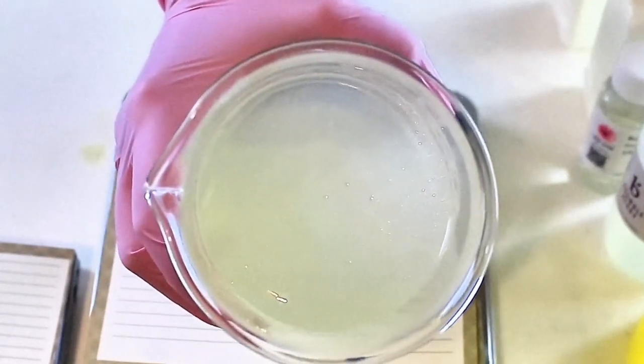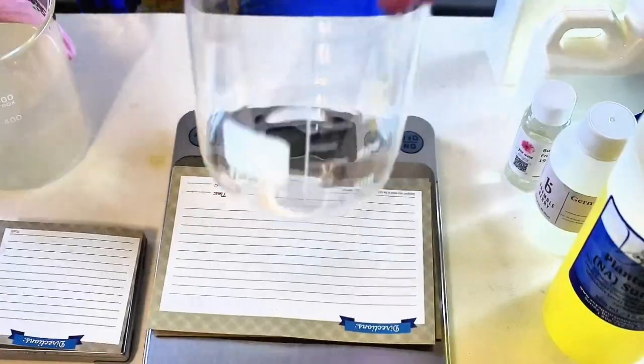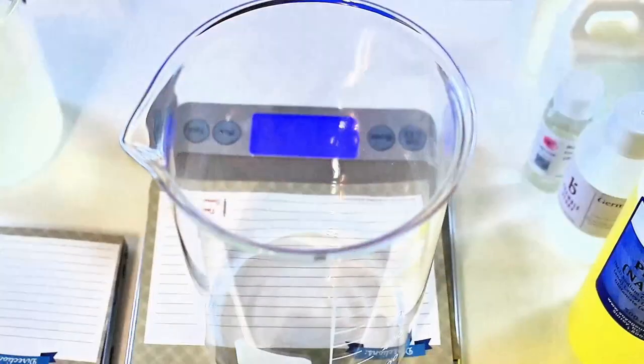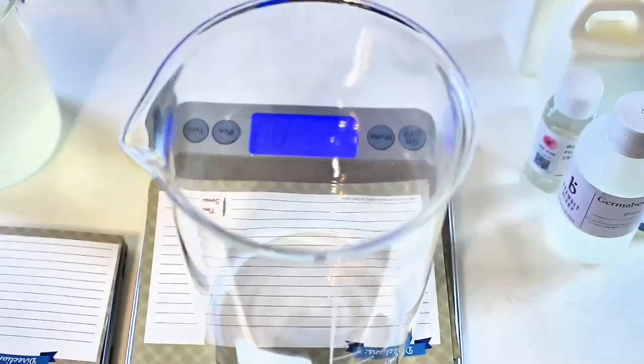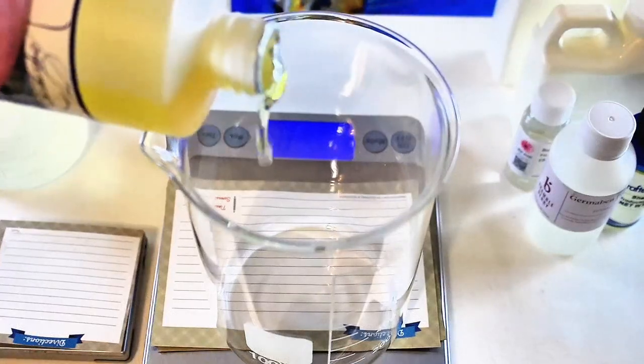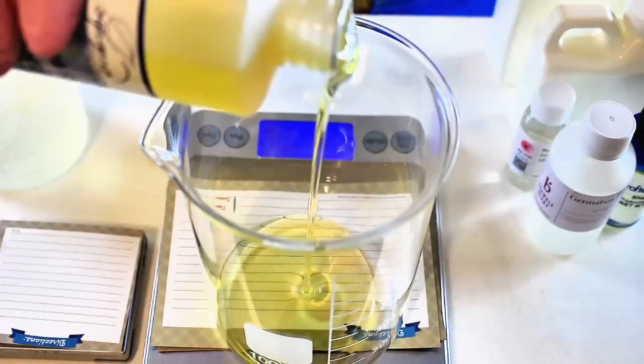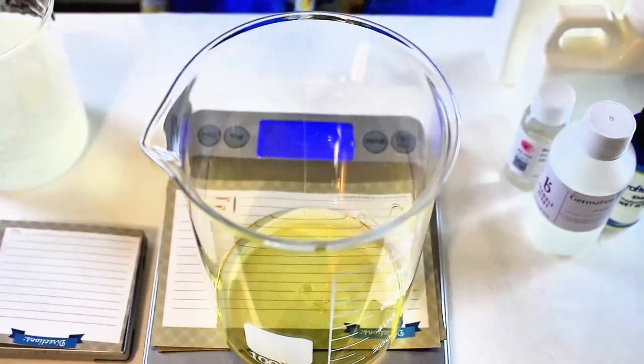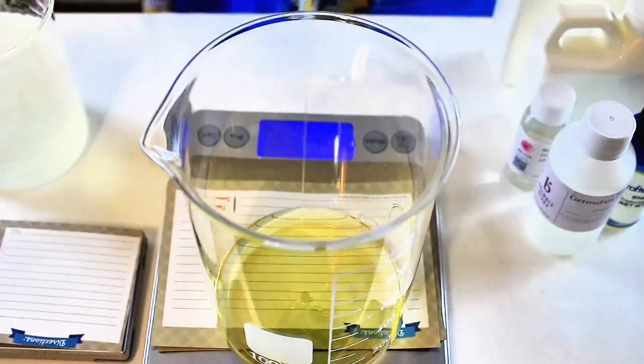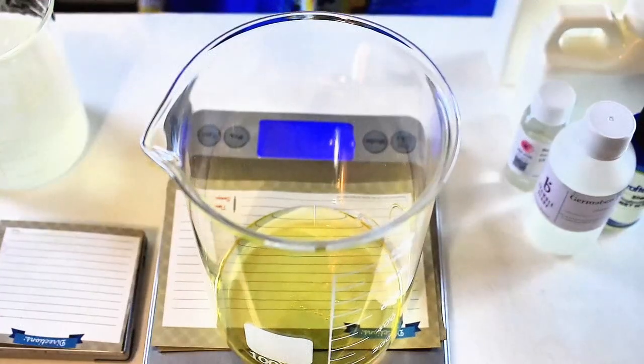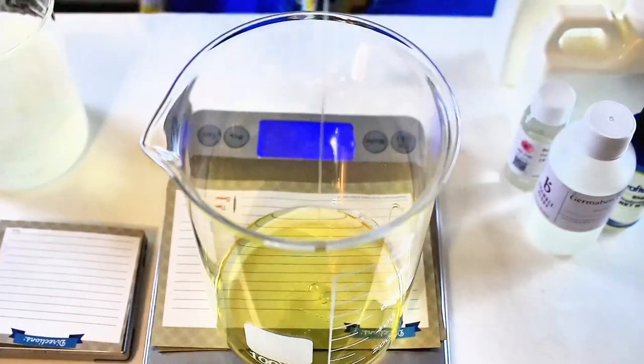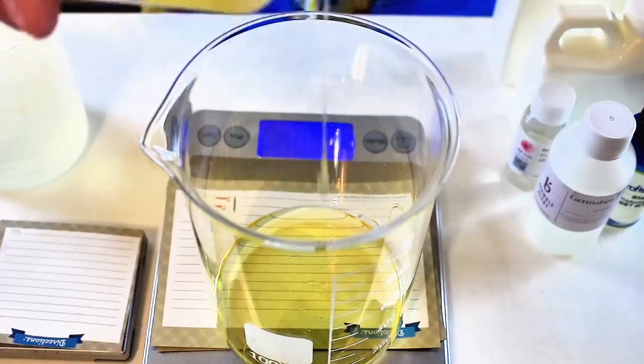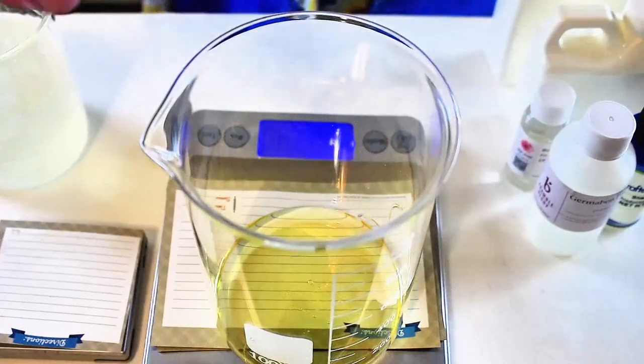Now, we're getting ready for the surfactant phase. I'm using a surfactant blend that is really mild. It consists of sodium cocoa amphoacetate, glycerin, lauryl glucoside, sodium cocoyl glutamate, and sodium lauryl glucose carboxylate. That was a mouthful. But anyway, the name of it is Plantapon SF, if you're looking for it at your suppliers.